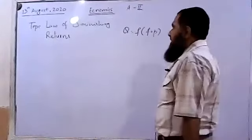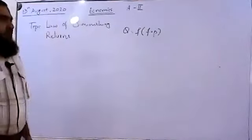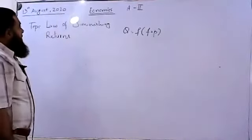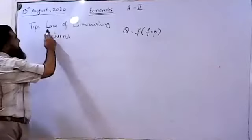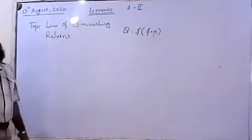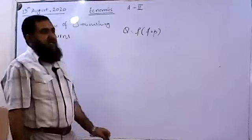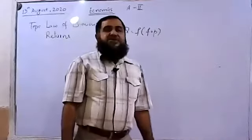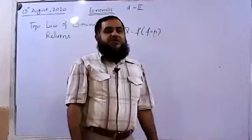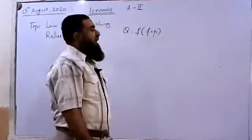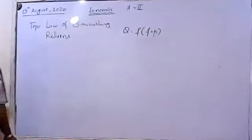That was a recap of our previous lesson. Now we are going to discuss the law of diminishing returns. The short-run production function — where at least one factor of production is kept fixed — is actually subject to diminishing returns.